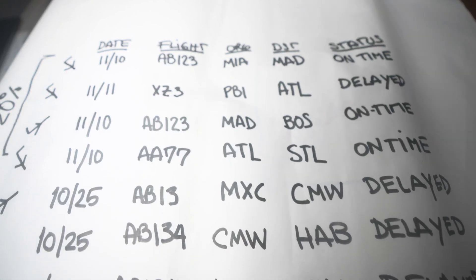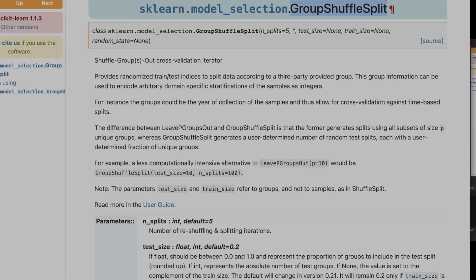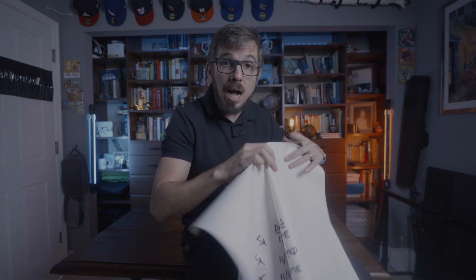We find the feature that captures the correlation and then group every related sample using it. In our example, we must keep every flight from the same day together in the same split. Look into group shuffle split from scikit-learn as a possible way to implement this. Whenever we do this, we prevent the model from using the flight date to determine the correct prediction. This goes beyond this particular example — it's quite common in real life to find problems where there is correlation between rows.